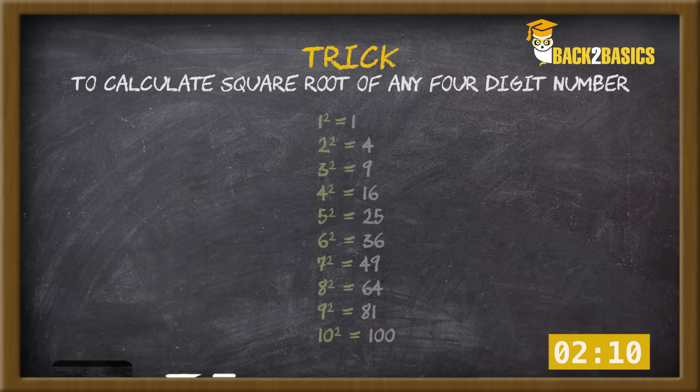Now, we all know the squares of 1 to 10. We may find a pattern in it which is: squares of 1 and 9 end with 1, 2 and 8 end with 4, 3 and 7 with 9, 4 and 6 with 6, and 5 ends with 5.